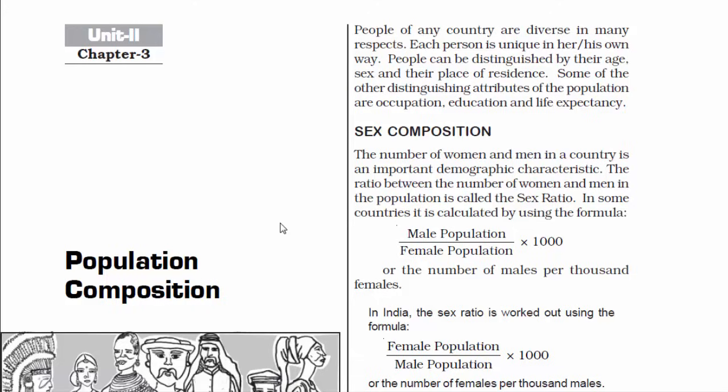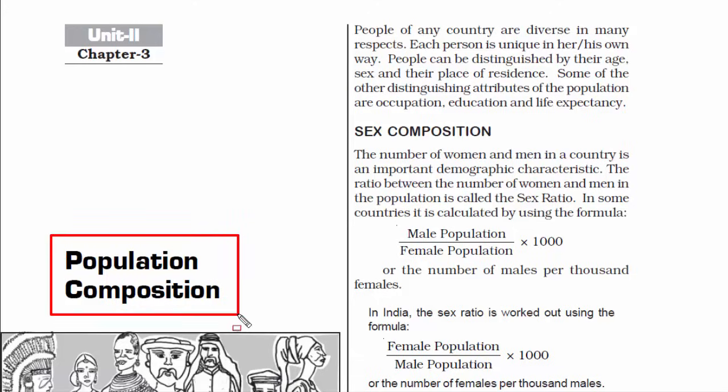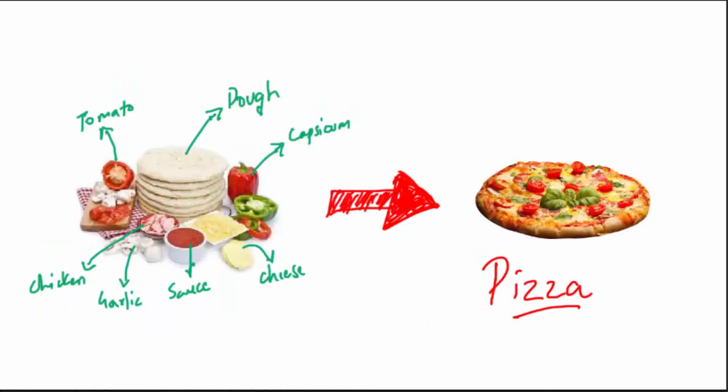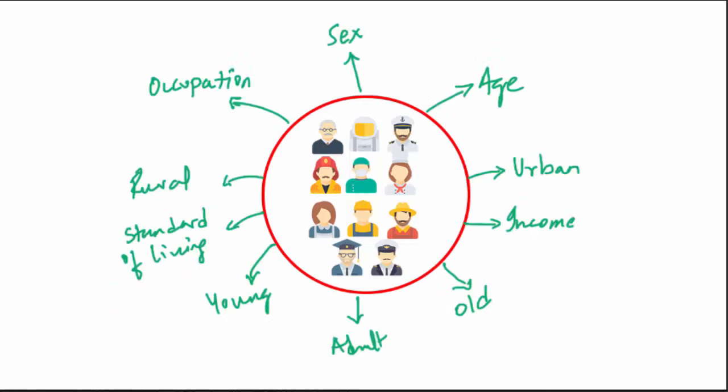Welcome to chapter 3: Population Composition. In this chapter we are going to learn what composes a population — meaning what are the ingredients of a population. Just like you have ingredients for a dish that you would like, similarly a given population has certain ingredients as well.